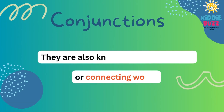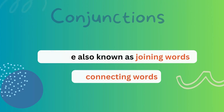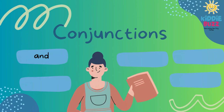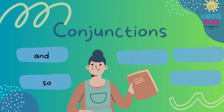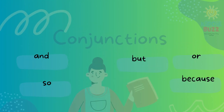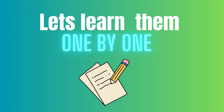Conjunctions are also known as joining words or connecting words. Some conjunctions that we will learn today are AND, SO, BUT, OR, and BECAUSE. Let's learn them one by one.